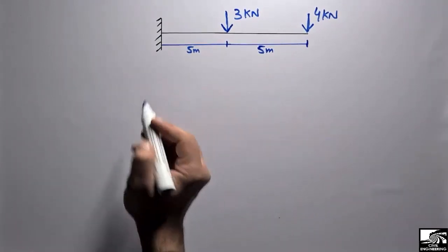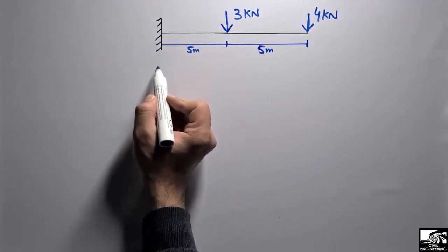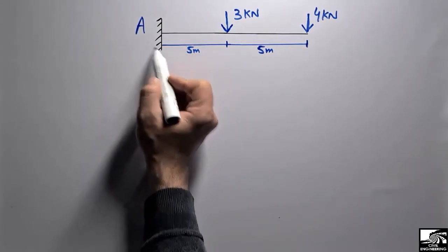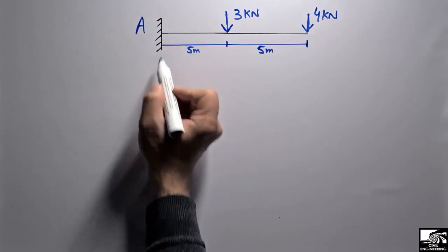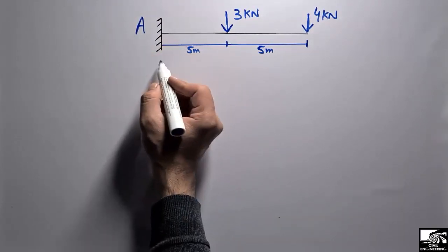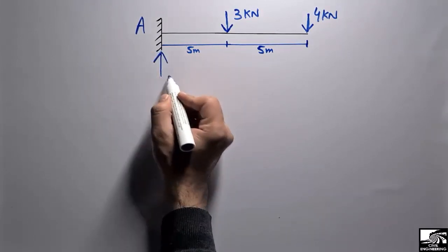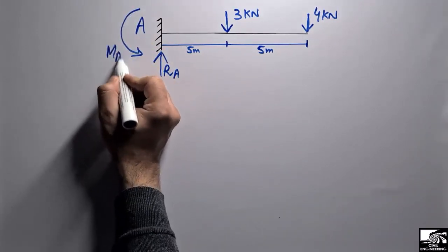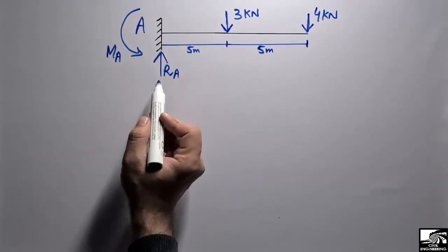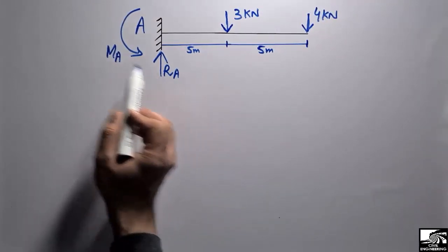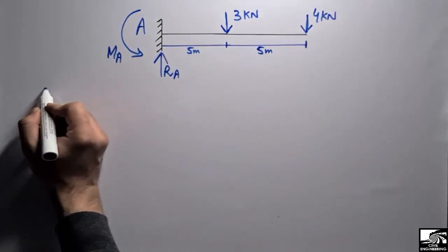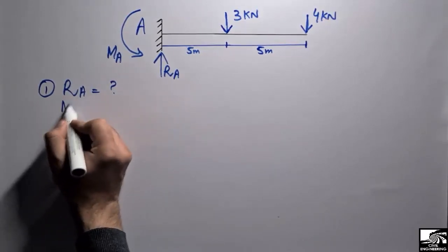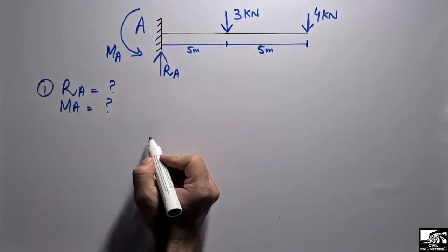To find the support reactions and draw the shear force and bending moment diagram, we consider the support reactions at point A. This cantilever beam has a fixed support, so this support can resist both the vertical load and the moment. So we have reaction RA and moment MA at point A. First we have to find out the support reactions RA and MA.